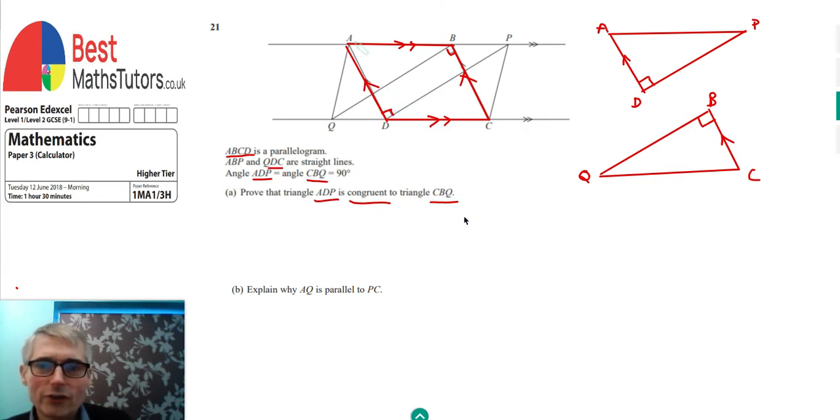So the first thing that we can actually say is looking at our, going back to our parallelogram ABCD, in a parallelogram, opposite sides have the same length. So we've got AD on this triangle here, and BC, and they must be of the same length because they're opposite sides of a parallelogram. So I'm just going to write this here. So we can say AD equals BC. And the reason is opposite sides of a parallelogram.